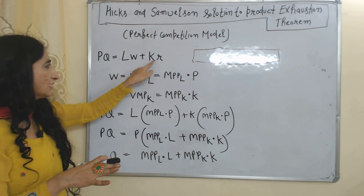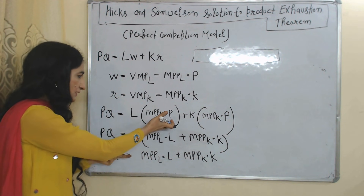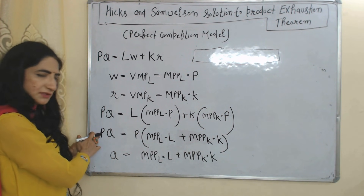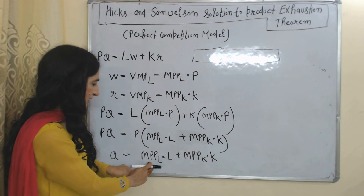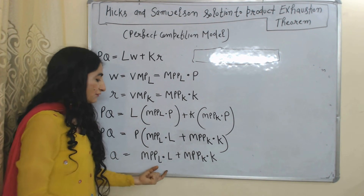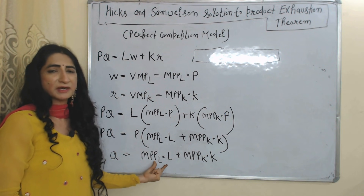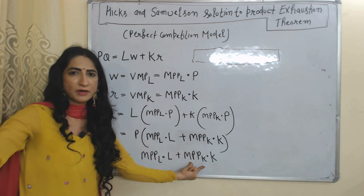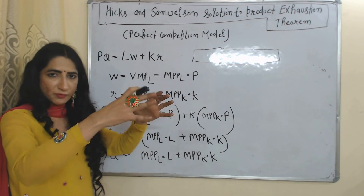In this equation we put the values of W and R. After doing this, our equation becomes as shown. We take P as common, and P cancels from both sides. Our final equation becomes: Q equals MPL times L plus MPK times K, where MPL times L is the contribution of labor and MPK times K is the contribution of capital in production.